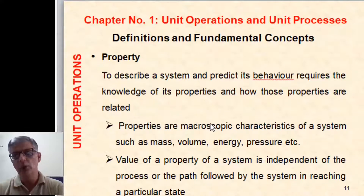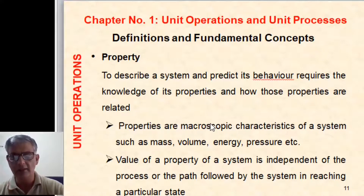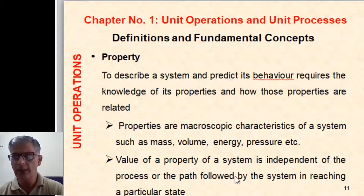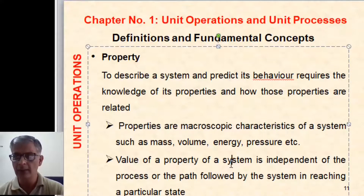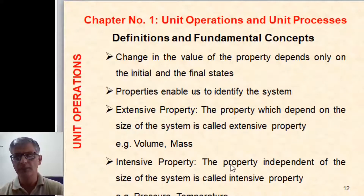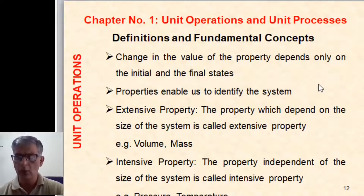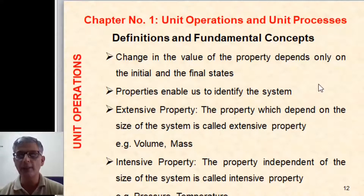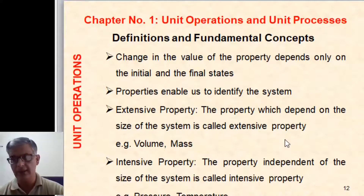Next is property. To describe the system and predict its behavior, we require knowledge of its properties and how they are related. Properties are macroscopic characteristics of a system such as mass, volume, energy, and pressure. The value of a property is independent of the process or path followed by the system in reaching a particular state. The change in value of a property depends only on the initial and final states. The property which depends on the size of the system is called extensive property — for example, volume and mass.